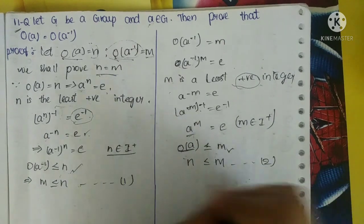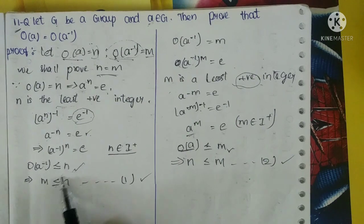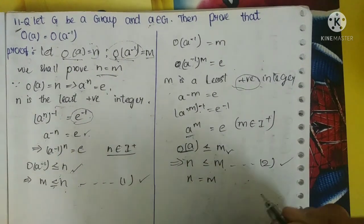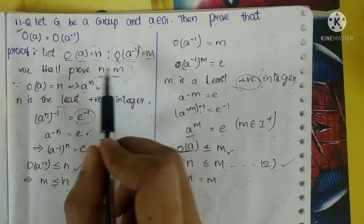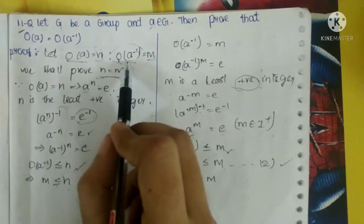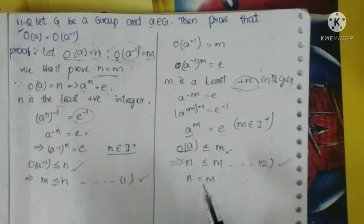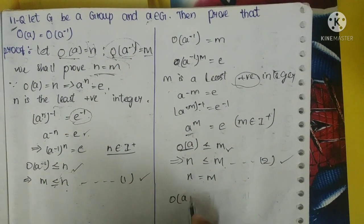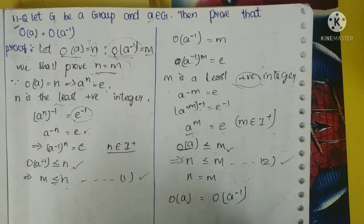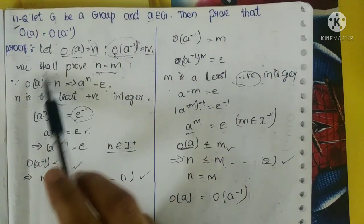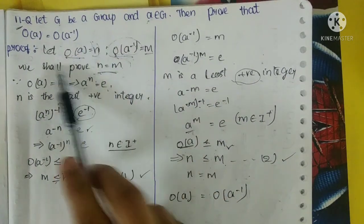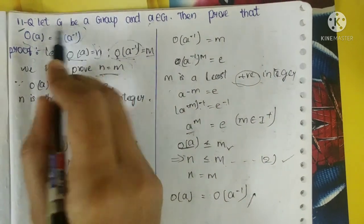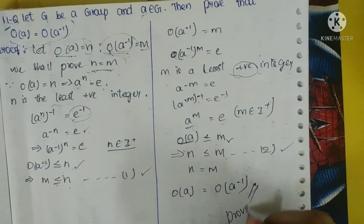So N ≤ M — let this be equation 2. From equation 1 and equation 2, we got M ≤ N and N ≤ M, which means N and M are the same. So N = M. We have proved N = M. Since N is O(A) and M is O(A⁻¹), substituting back gives us O(A) = O(A⁻¹). Hence proved.